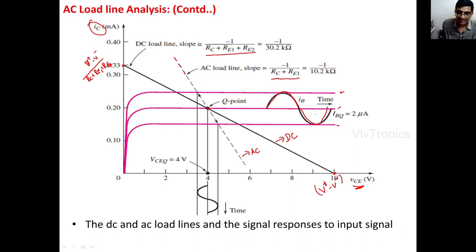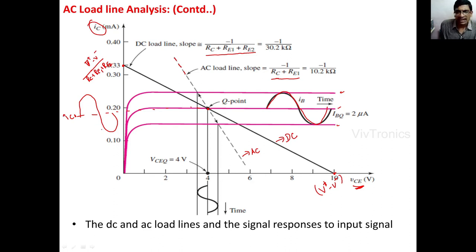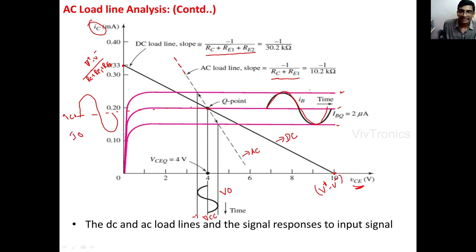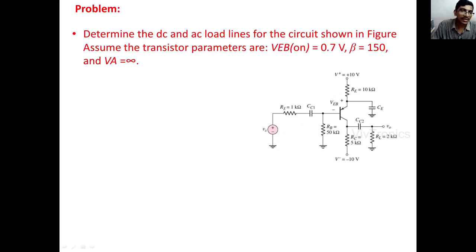Due to the AC excitation at the base, we get an AC collector current ic, which produces an AC output voltage vce across the collector-to-emitter terminals. This is the AC output voltage and output current response. This concludes the AC load line analysis, where we found the slopes of both the AC and DC load lines.